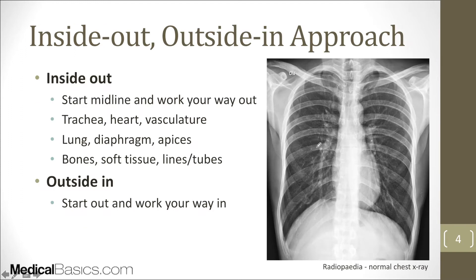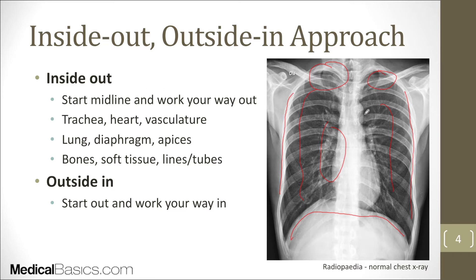The next commonly used approach is the inside-out approach. That is either looking inside and going out, or the outside-in approach, starting on the outside and working your way in anatomically. The inside-out starts midline — beginning with the trachea, the heart, the vasculature, then going into the lungs, the diaphragm, the apices for any pneumo, and finally the bones, soft tissues, and any lines or tubes. The exact opposite works as well.